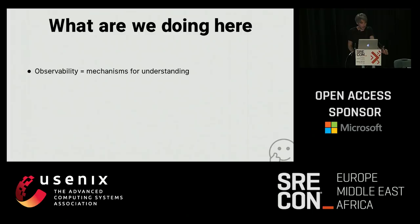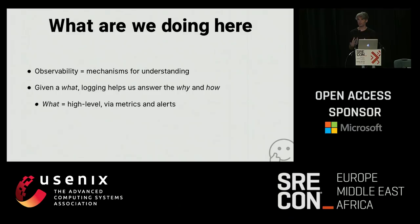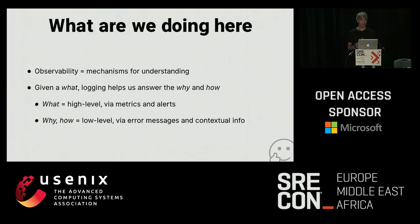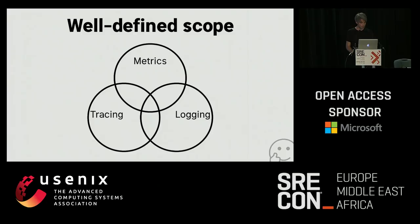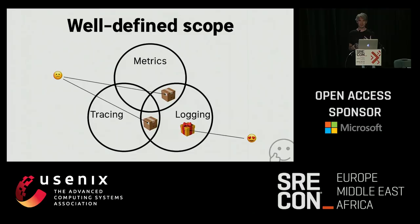What are our actual goals in the observability space? Observability is just a mechanism for gaining understanding. Given some error — the what — logging helps us understand the why and the how. The what probably comes via metrics and alerts, and then the why and how is the stuff we need to dig into at a much lower level via error messages or contextual info. When building infrastructure from composite parts, it's beneficial to have each component fit for a specific purpose. If we have a product designed exclusively for logging, that's great, whereas a product that tries to solve all three concerns at once becomes less useful the more general it is.